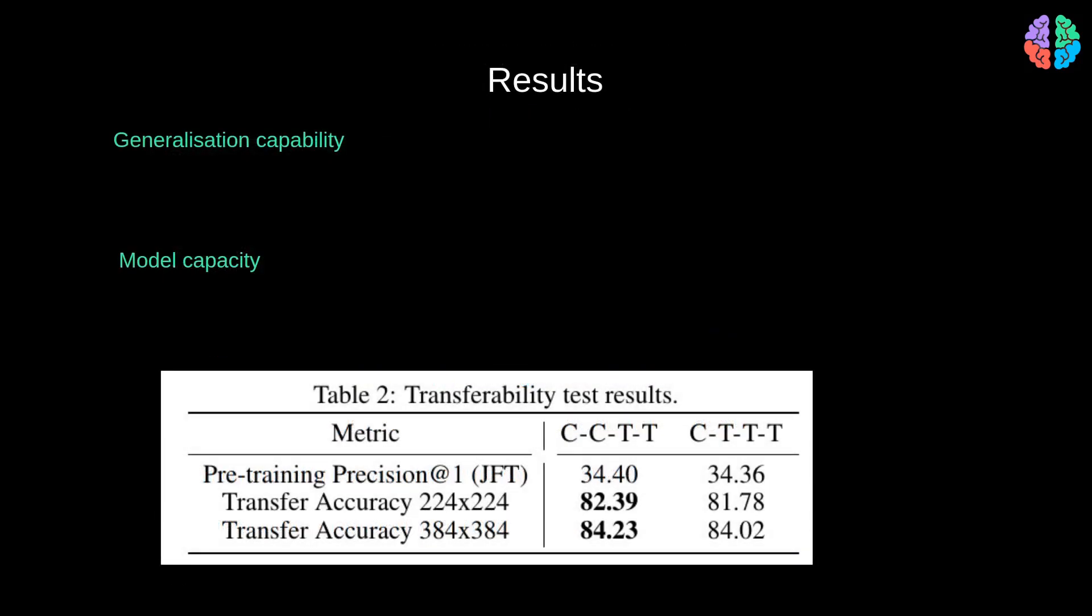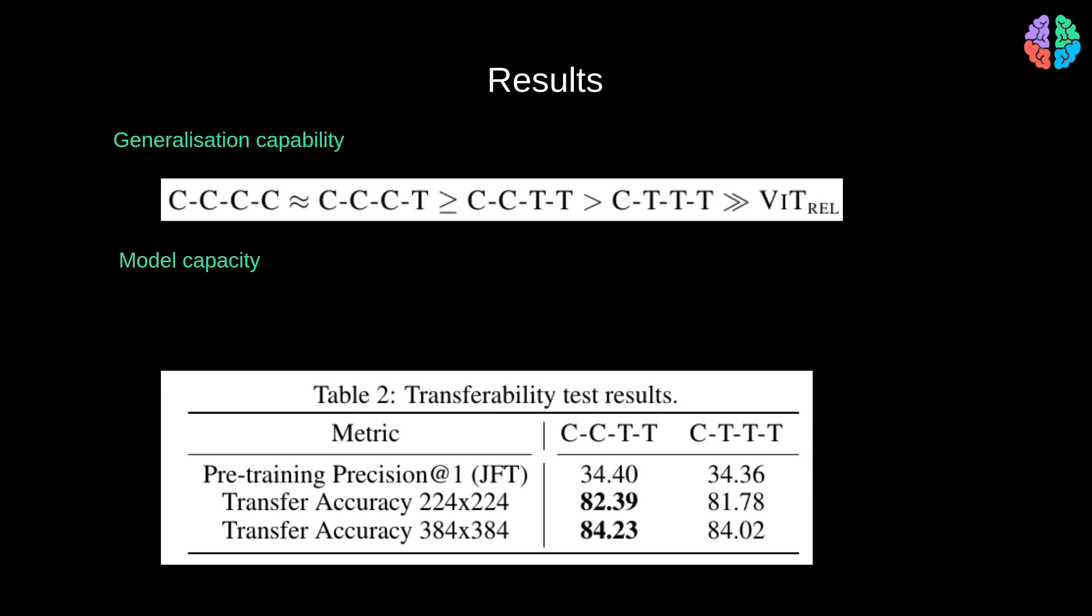The main reason for developing CoAtNet architecture is to improve the generalization and model capacity simultaneously for a single network. So it's worth studying systematically the different combinations of conv and transformer blocks. In terms of generalization, the more the convolutional layers, the better the generalization should be. The experimental results indeed show exactly the same.